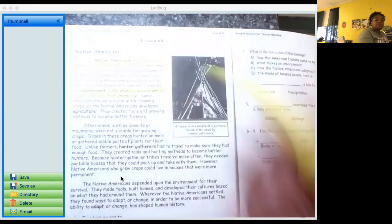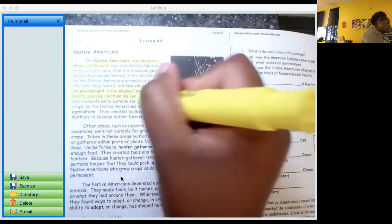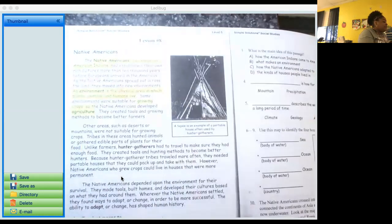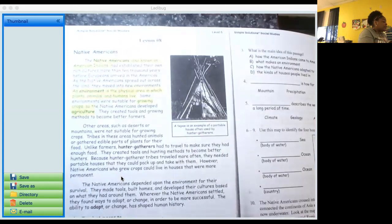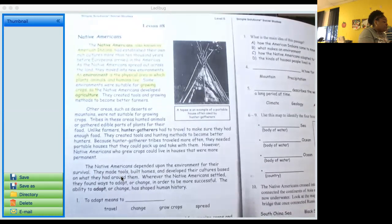As the Native Americans spread out across the land, they moved into new environments. An environment is the physical area in which plants, animals, and humans live. Another vocab word, let's highlight it. Some environments were suitable for growing crops, so the Native Americans developed agriculture.